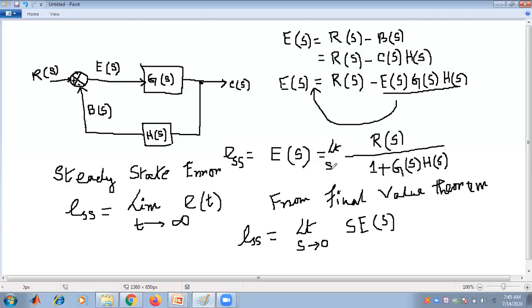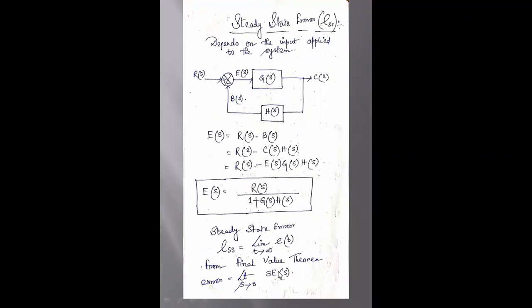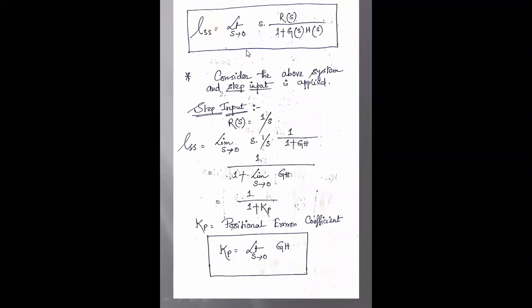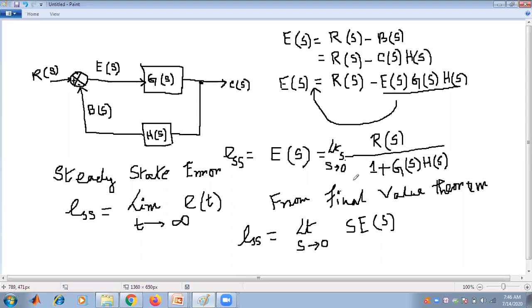Using the concept of the final value theorem, the steady state error equation becomes: ESS equals limit s tends to 0, s into RS divided by (1 plus GS·HS). This is the mathematical expression of steady state error.